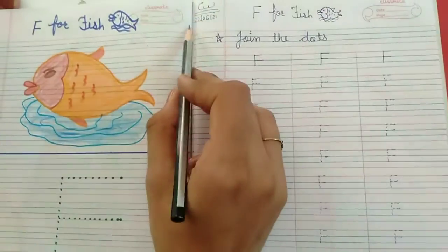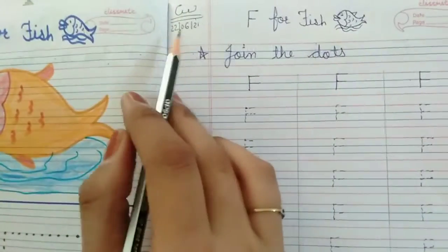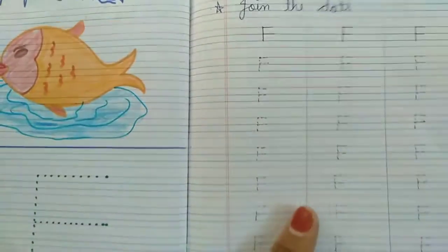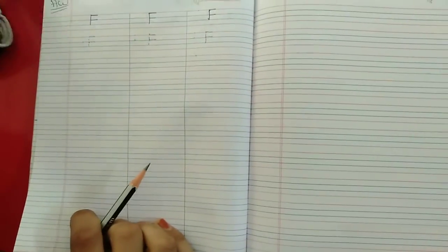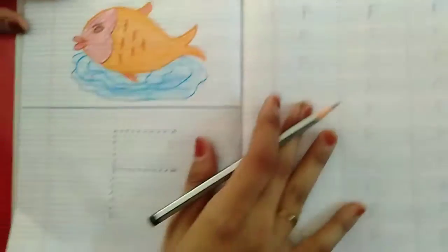Date aapko 22, 6, 21. And yehi date aapko likhni hai. Heading deni upar and full page pe aapko dots karke dena hai. Classwork mein bhi and homework mein bhi. One line chod ke nahi hai. Aapko full page pe karna hai.